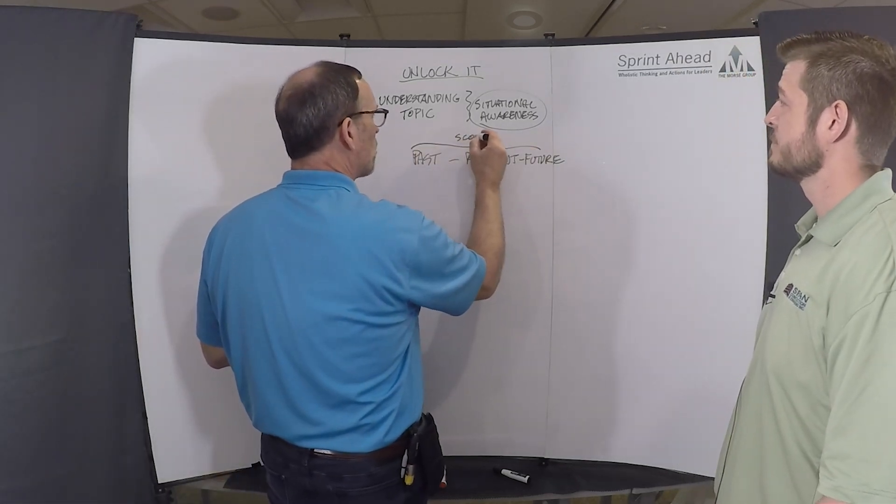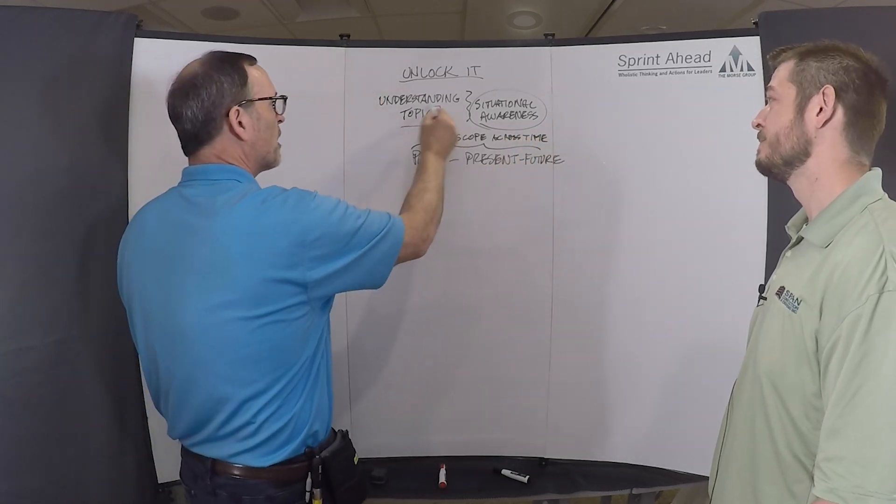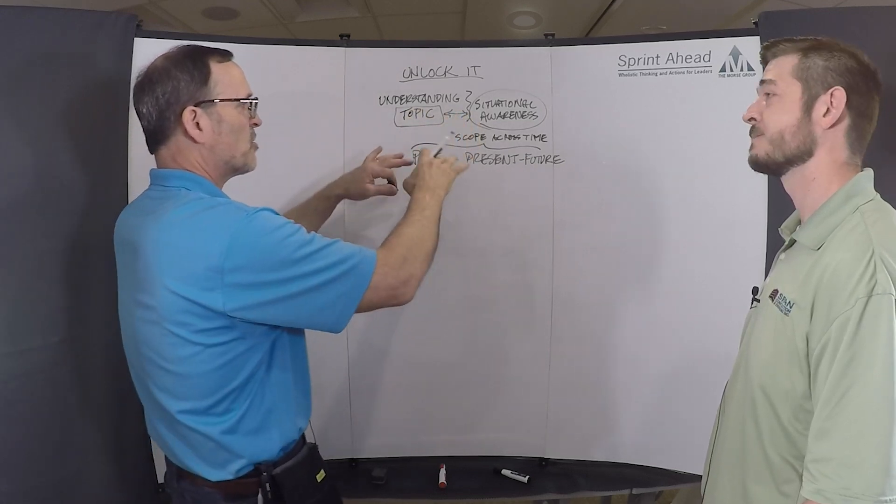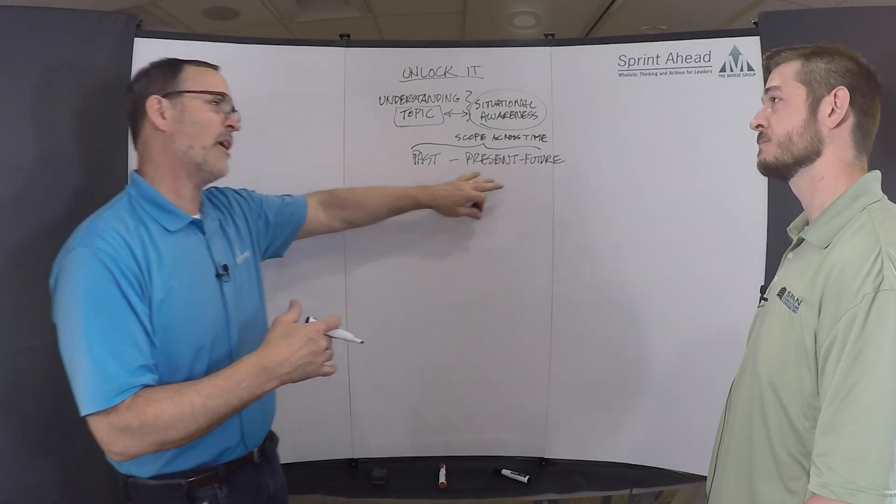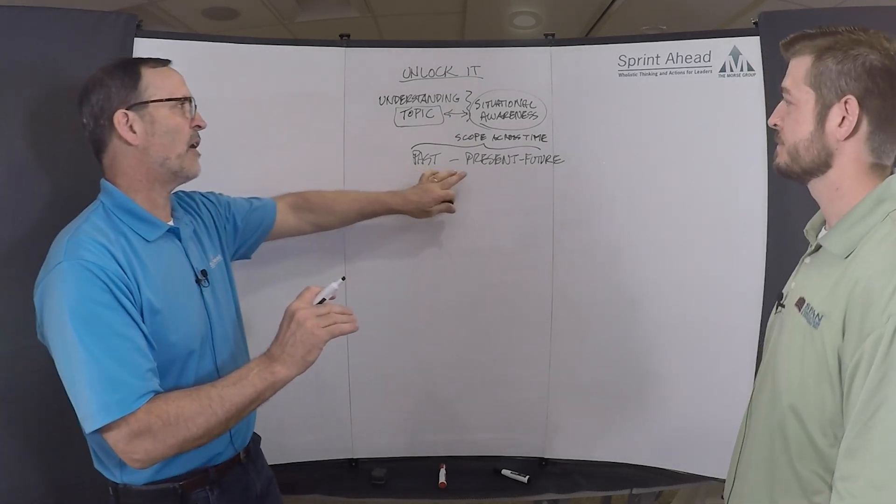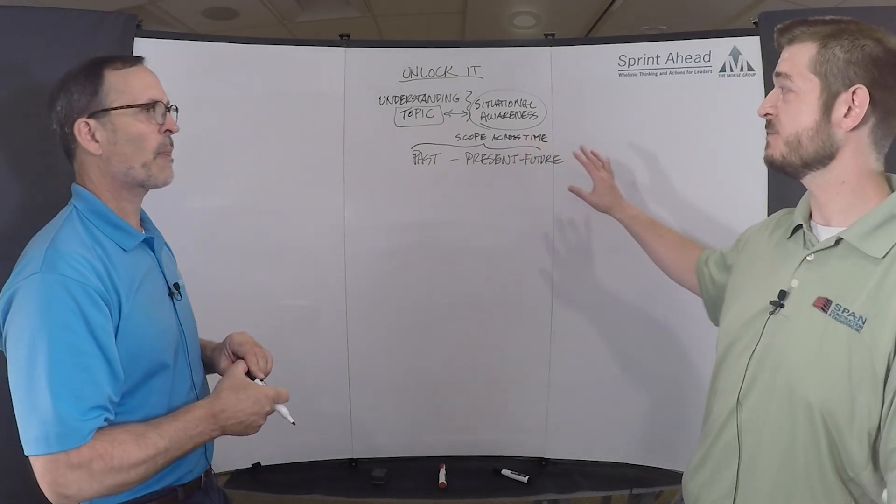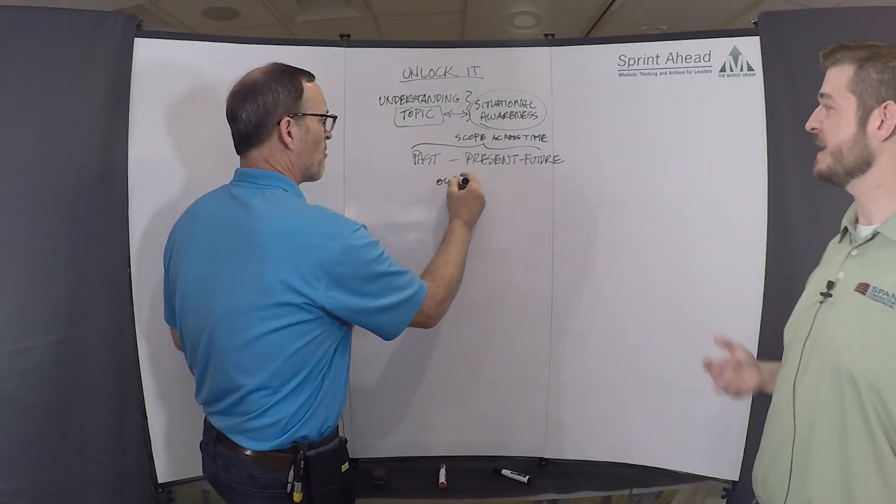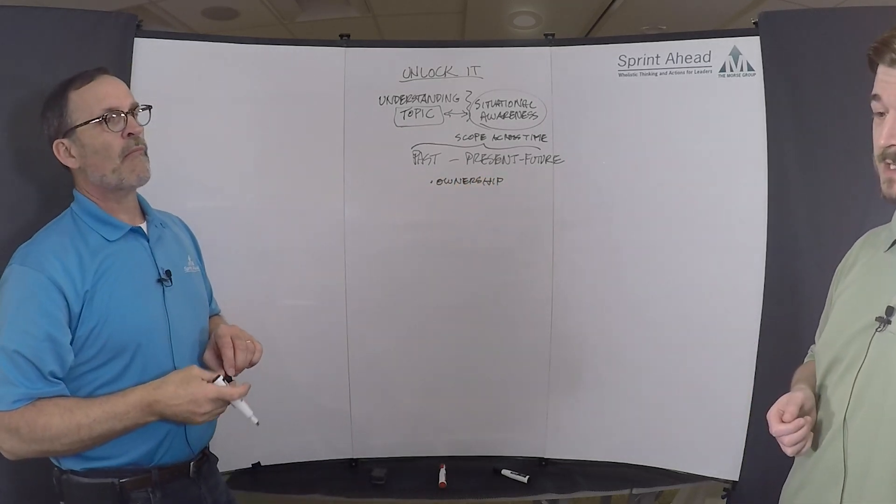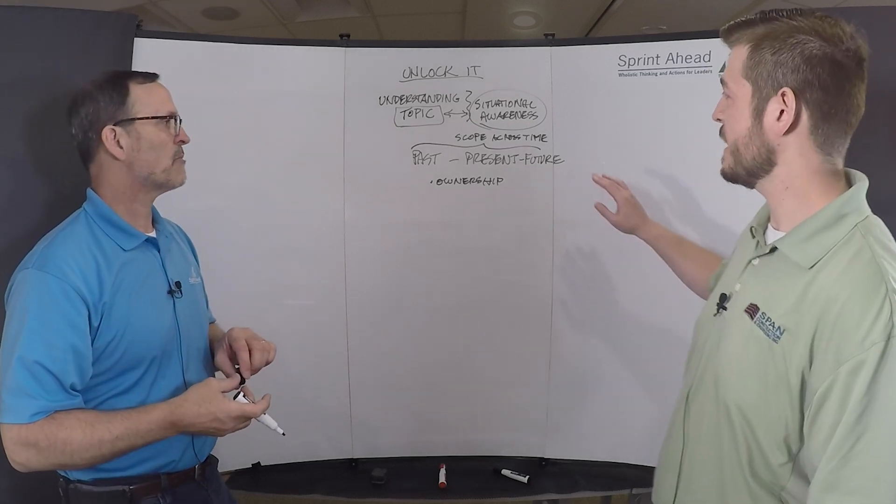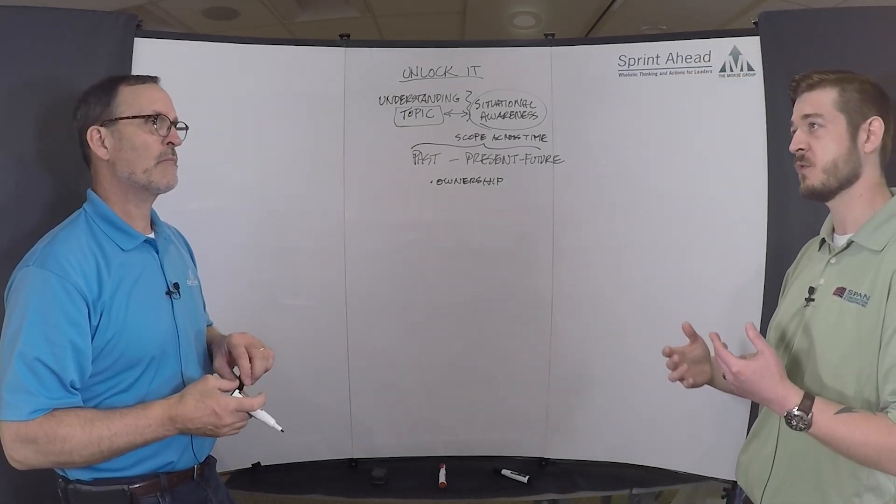So what I'm hearing you say is almost like this scope across time. We got this topic, but then we need to understand this scope across time, the situational awareness of what lives with it. I'm hearing that those aspects as you were describing that. Are you describing ownership or what elements of the situational awareness across time are you thinking about in that? This was a brief safety concern example. So this is going to be all about ownership, responsibility, and abatement.